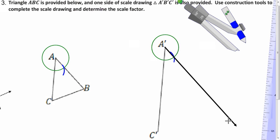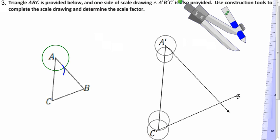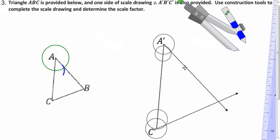So B prime has to be somewhere on this ray. And if we repeat those steps over at C prime, we get this figure. And so this point over here is B prime.